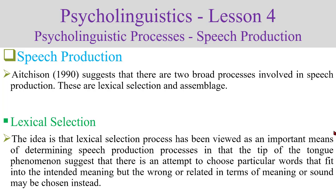The tip-of-the-tongue phenomenon suggests that there is an attempt to choose particular words that fit the intended meaning, but wrong or related words in terms of meaning or sound may be chosen instead. Basically, when we want to communicate meaning and talk to people, we select some words to make a natural sentence. In that selection of words, sometimes we select the wrong words — that is what lexical selection is.